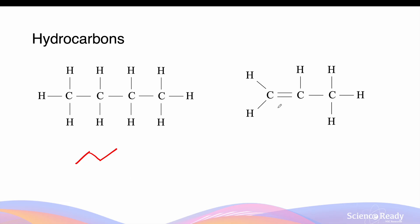Similarly, on our right hand side, we will draw our first backbone which contains 3 carbons. However, notice that there is a double bond which we need to indicate in the diagram. Here we have 3 carbons with our double bond.